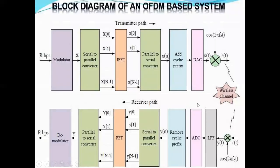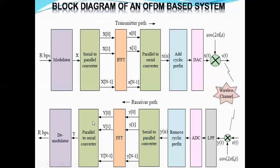This is the block diagram of an OFDM system. The input data is given to a modulator where it is modulated, and all serial data is converted into parallel. This parallel data is given as input to an IFFT, where it is converted back into serial data. A cyclic prefix is added, then it is converted to analog and forwarded into a wireless channel. On the receiver side, noise is filtered out, it is converted back from analog, the cyclic prefix is removed, serial data is converted into parallel and given to an FFT section, where it is converted back into serial data and the original data is demodulated.